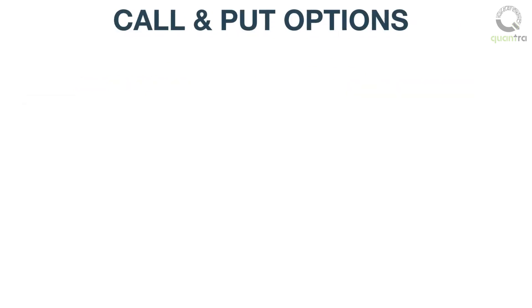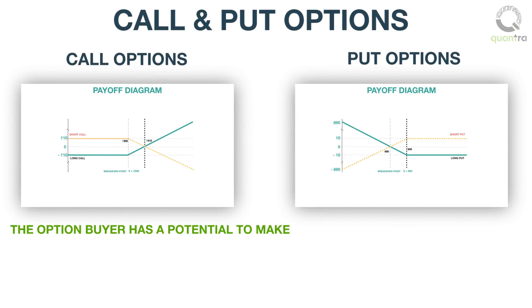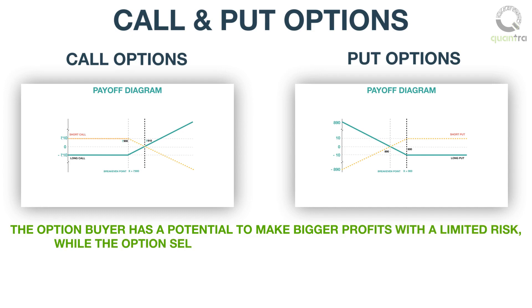In the call and put options, we learned about the risk of the option buyer and the option seller, and concluded from the simple payoff scenario that the option buyer has the potential to make bigger profits with limited risk, while the option seller has very limited profit and higher risk.